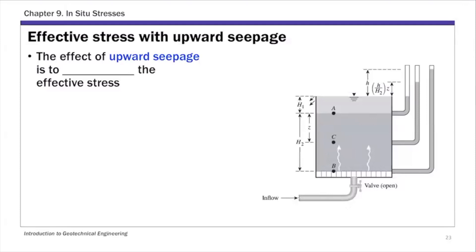In the first scenario, we have a couple of scenarios for effective stress with seepage. The first scenario is effective stress with upward seepage. The setup is pretty simple. If you look at this figure on the side, we have a soil specimen submerged in water, with the water table at a distance H1 above the soil specimen. Point A is basically the top of the soil specimen, so we have a water body above the soil. This is a simple setup for upward seepage.